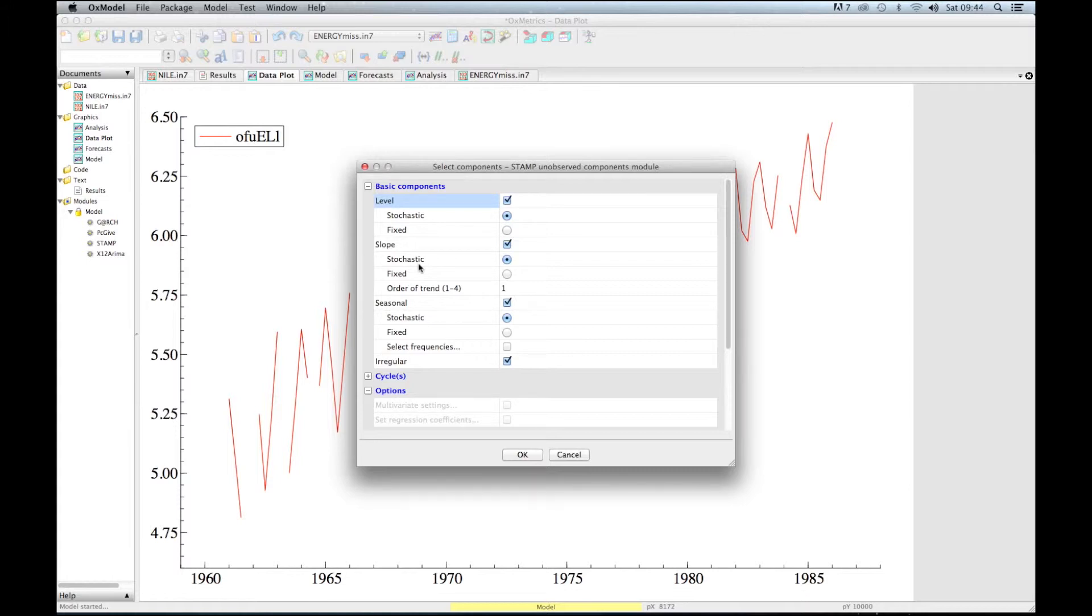That is what we call the slope variable, and the slope variable is also stochastic. We have a seasonal component because in winter and summer we have different electricity demand during these periods of the year. That's why there's a seasonal effect, and we also select a seasonal effect. We basically accept all the defaults.